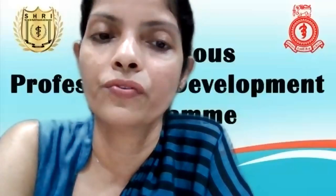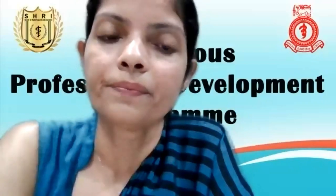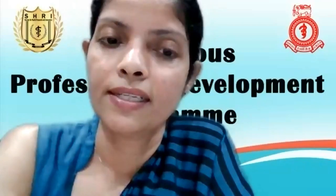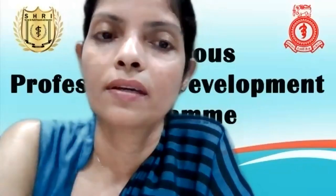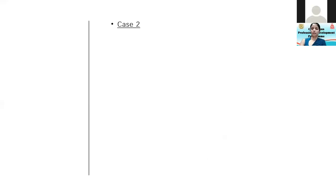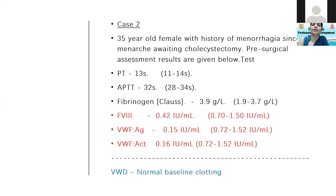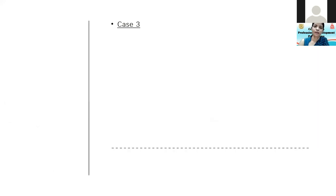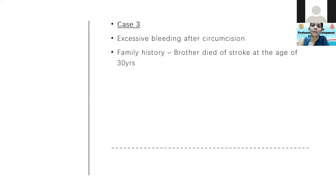She has mildly low factor eight activity levels, indicating Von Willebrand disease type one. In Von Willebrand disease, most of the time your APTT and prothrombin time can be normal — those are the routine tests we do in the laboratory, so they can give a normal value. If you rely only on these two tests without taking a proper history, you might miss a bleeding disorder.